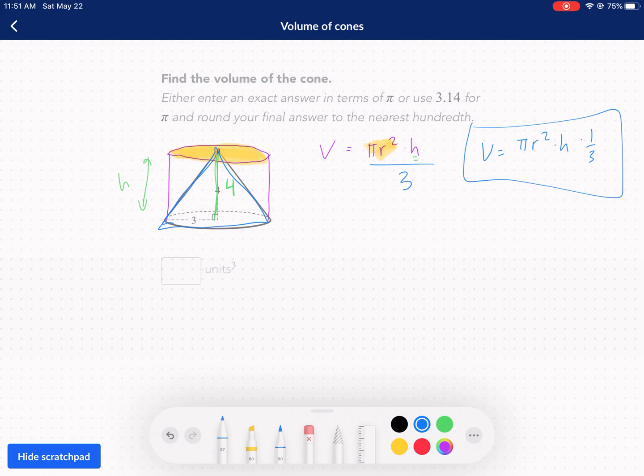So what we're going to do is we're just going to identify the components we're looking for. We have the radius right here. That's three. So radius squared, three squared. We have our height. Our height is four.